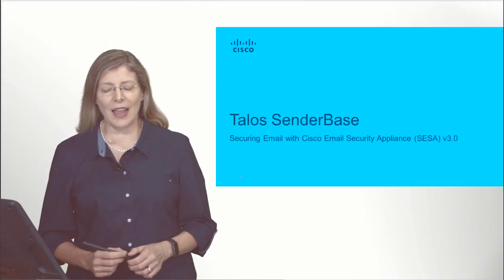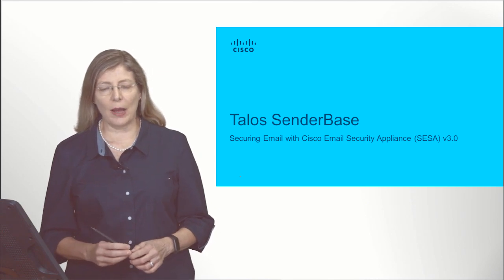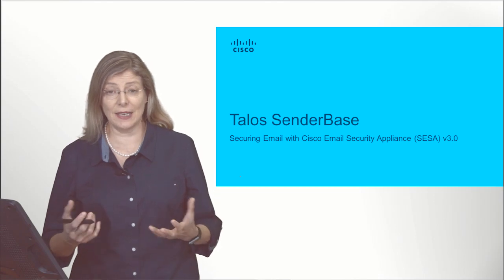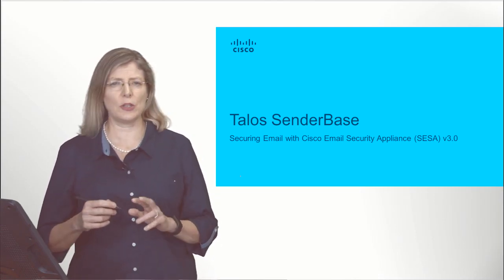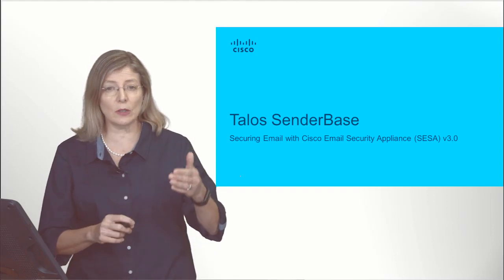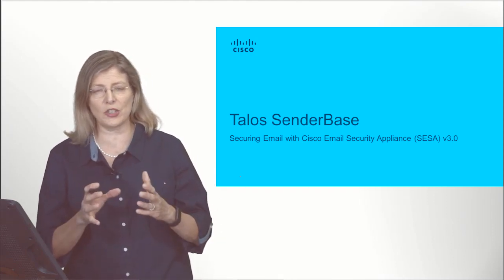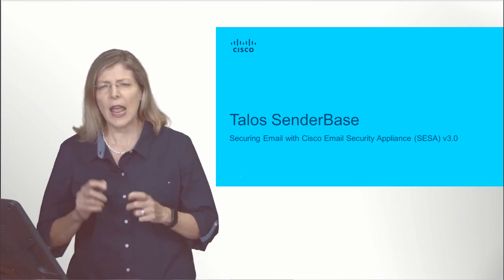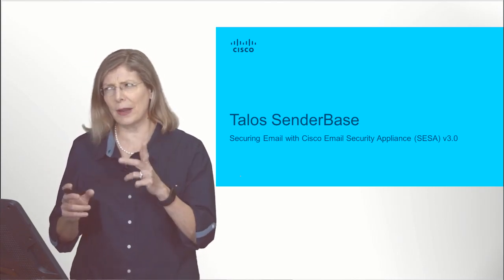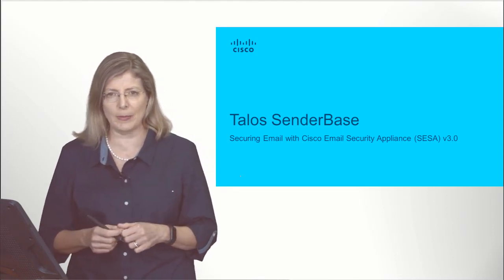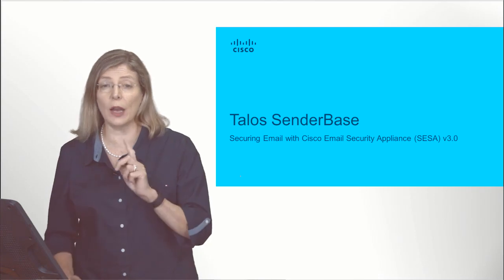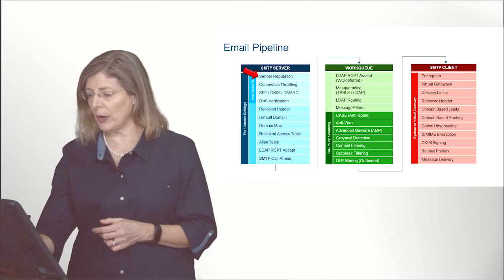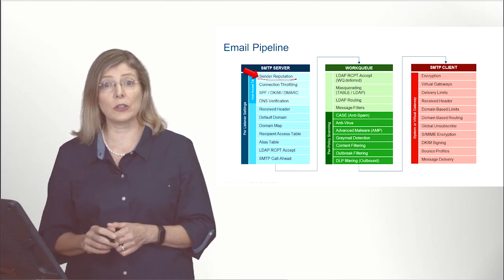Welcome back. Let's talk about controlling spam, which is the main reason why people buy the ESA. To control spam, we can do it two ways: we can control it at the beginning of the session during the three-way handshake using the sender-based reputation score that we get from Talos. There's another way I discussed in my first recording regarding the dynamic way of discovering spam, but in this recording we will focus on the sender-based reputation score from Talos.